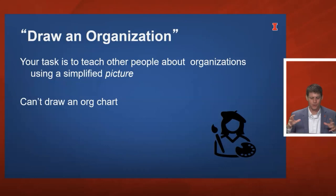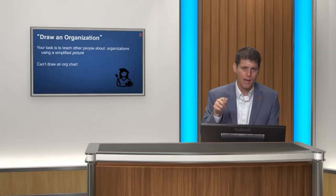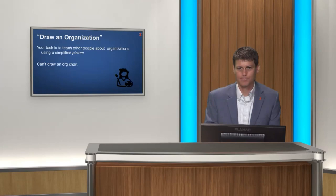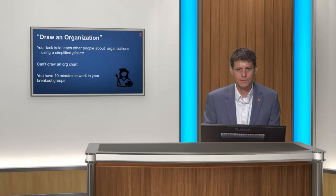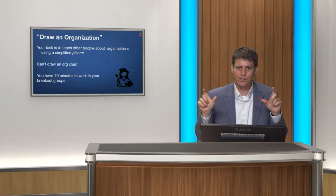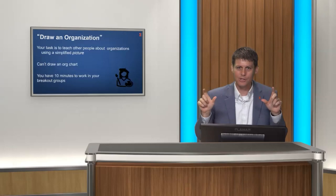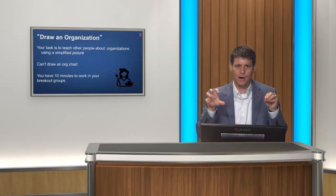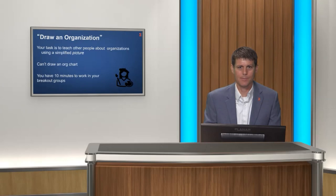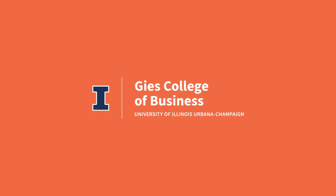Sometimes people draw sports teams or things out of nature. Draw a picture that can help teach us something about what an organization is. I'm going to give you 10 minutes to work in your breakout rooms and draw a quick little picture. You can draw it on a piece of paper that you can hold up and show to us, or some people get really fancy and do something on their computer. As a group, come up with a depiction of an organization, and then we're going to call on some of your groups to share what you came up with. Go ahead and get into your breakout rooms.